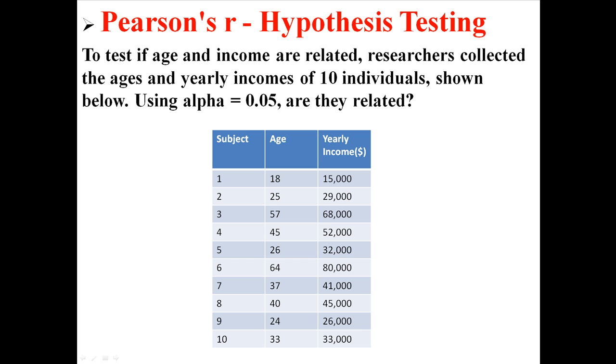So let's take this data, which I had before, and now I'm going to ask you a question. To test if age and income are related, researchers collected these ages and yearly incomes. Using alpha equals 0.05, are they related?